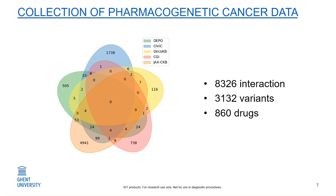As you can see on the slides, these databases have only a little overlap between them. Therefore, it is important to include all these databases to know which pharmacogenetic information is available from the literature. We combined these five databases and ended up with 8,326 variant-drug interactions between 3,132 variants and 860 drugs.